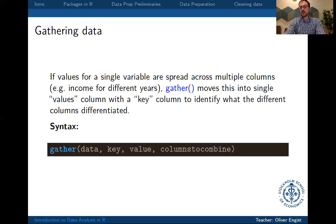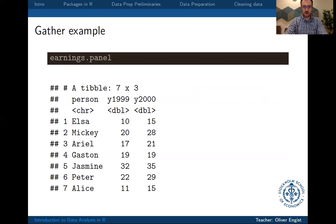And then columns to combine is basically which columns do you want to have that previously were separate columns, but now you want to have them arranged in rows. So let's look at an example.